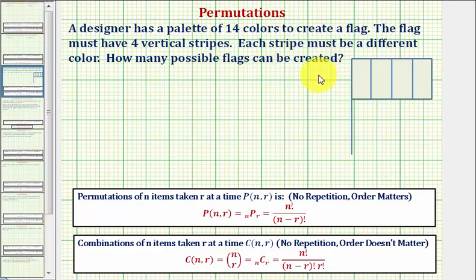So whenever we have N items, or in this case 14 colors, and we're selecting R items at a time, or in this case four colors for the stripes, our first question should be, does the order matter?